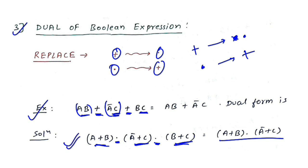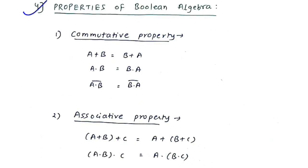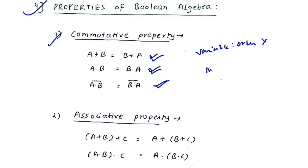Now the properties of Boolean algebra. First, the commutative property: A+B = B+A and A·B = B·A — changing the order does not matter. Note: order does not matter for Boolean variables, but it does matter for matrices.